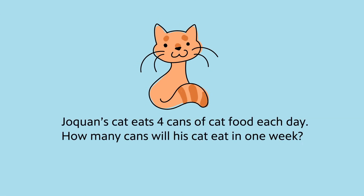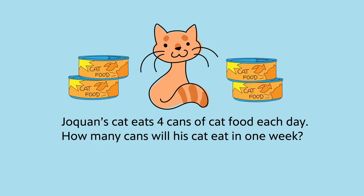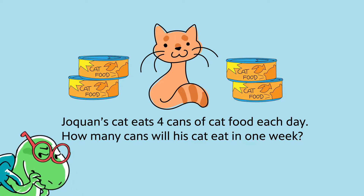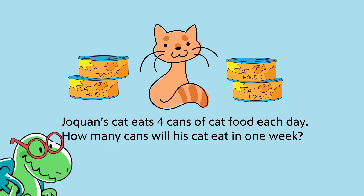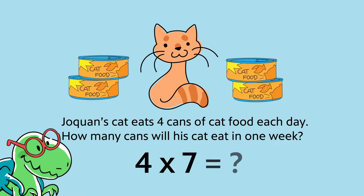Jaquan's cat eats four cans of cat food each day. How many cans will his cat eat in one week? Let's write an equation to represent this problem. What are the factors or the numbers being multiplied in this problem? That's right — four and seven are the factors.